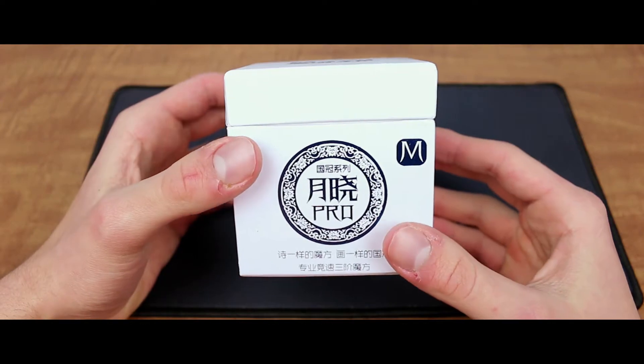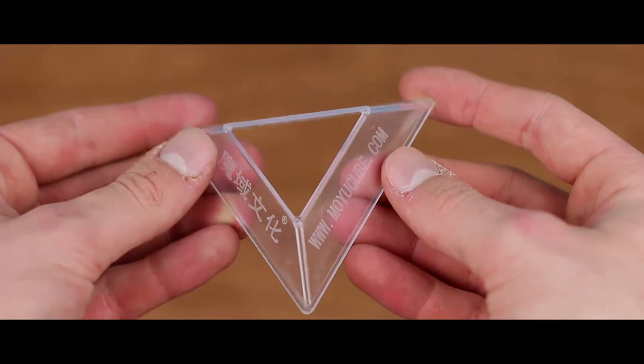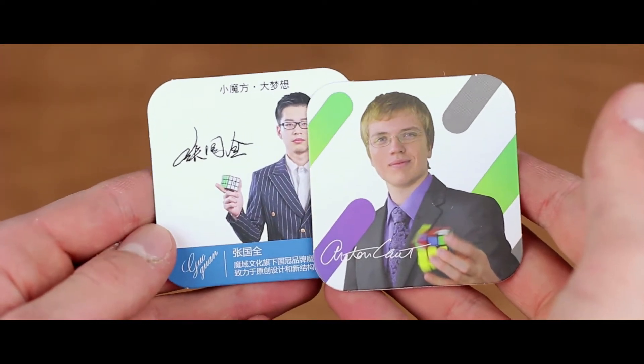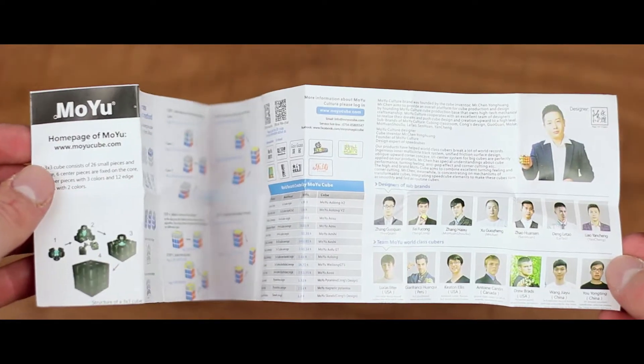The Pro-M comes in a nice white and blue box, and includes a Moyu cube stand, Team Moyu and GuoGuan cards, a tensioning tool, a screwdriver, a pamphlet, spare magnets, and of course, the puzzle itself.